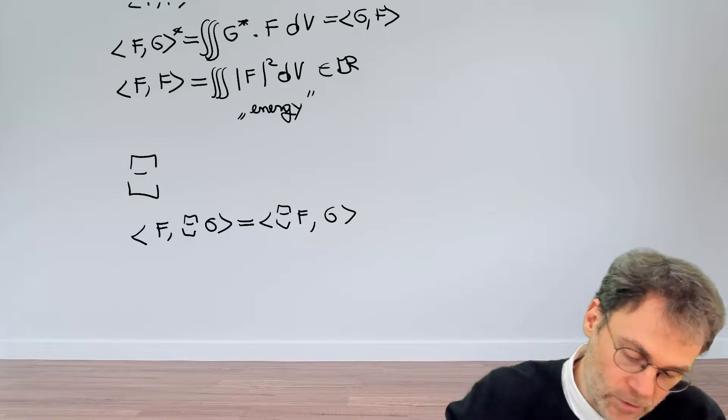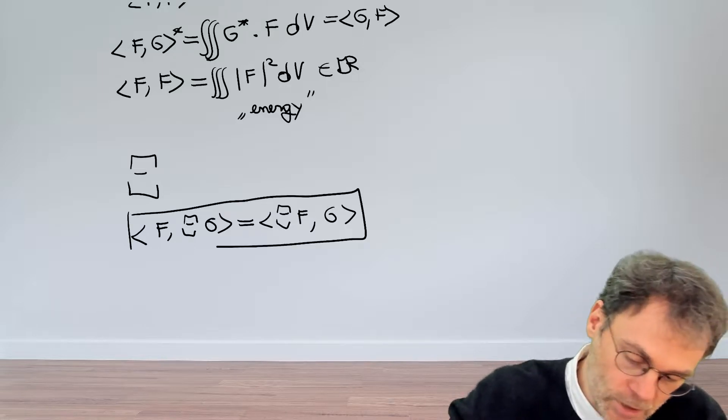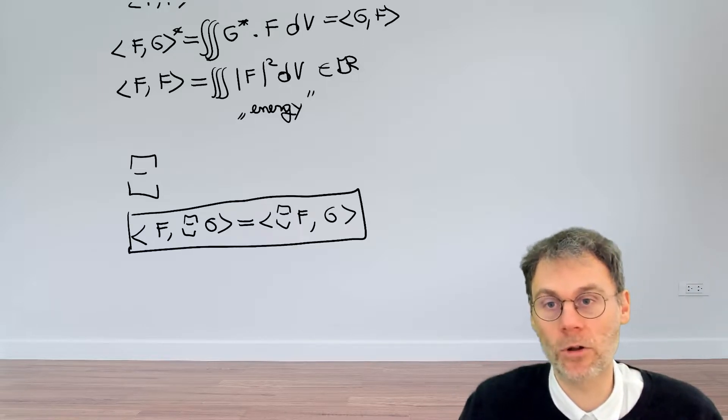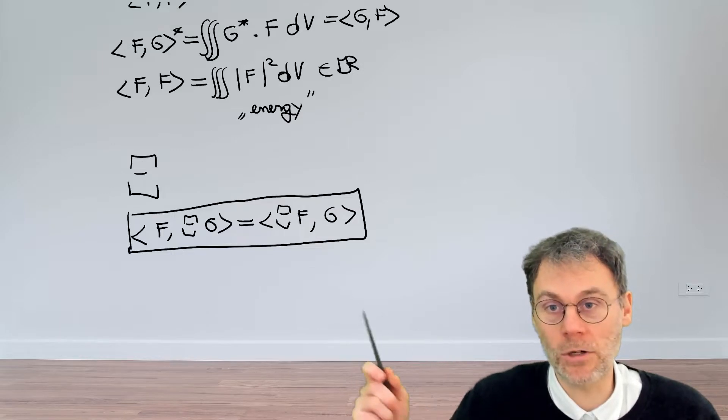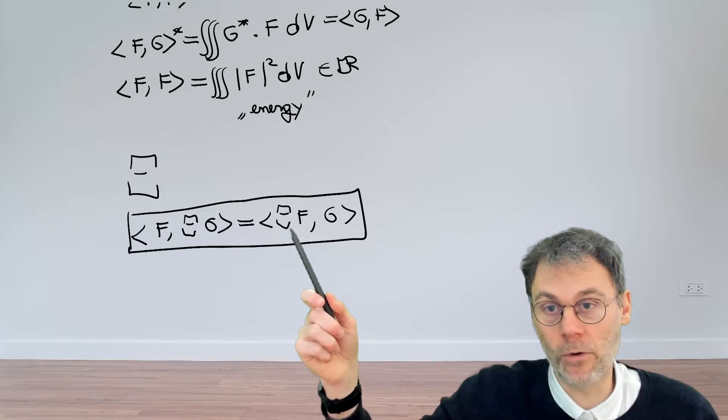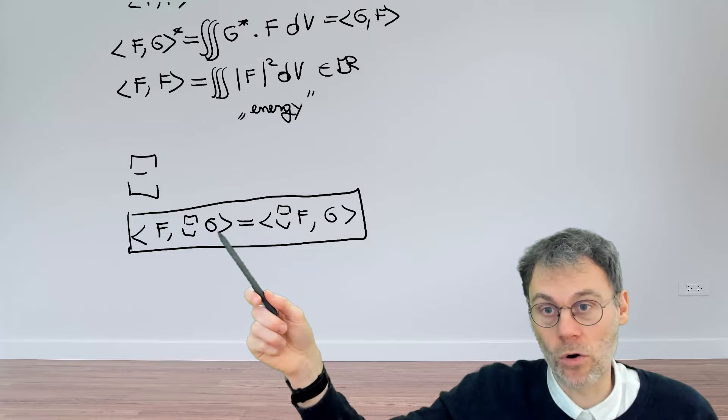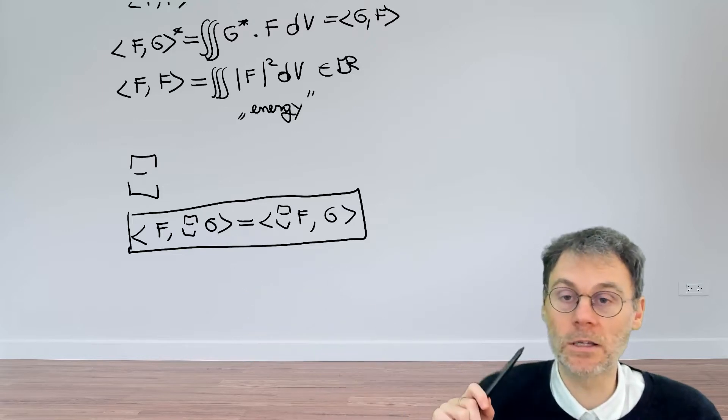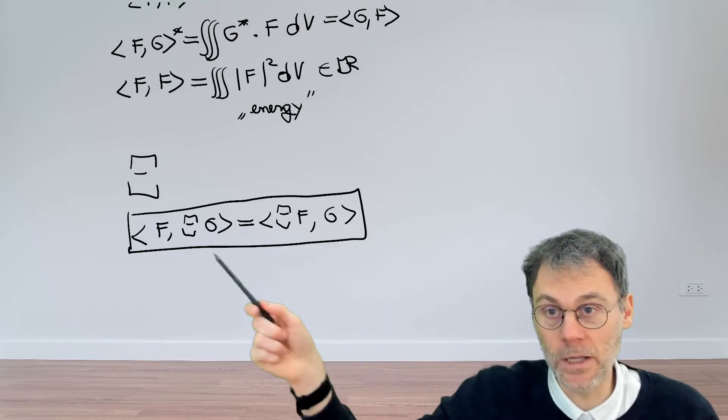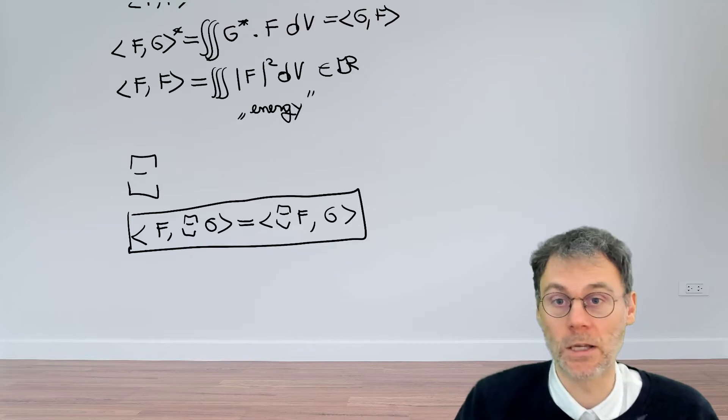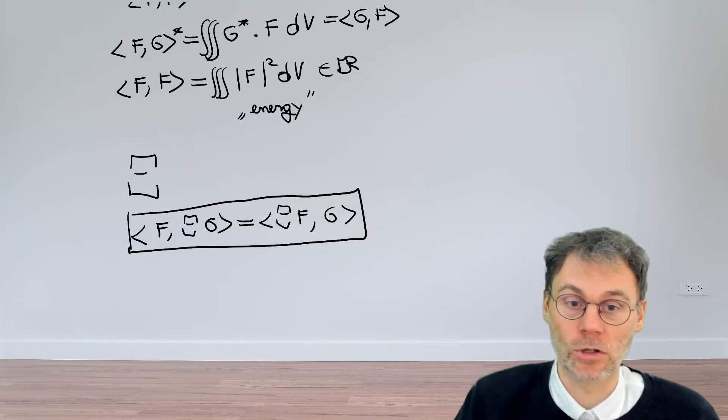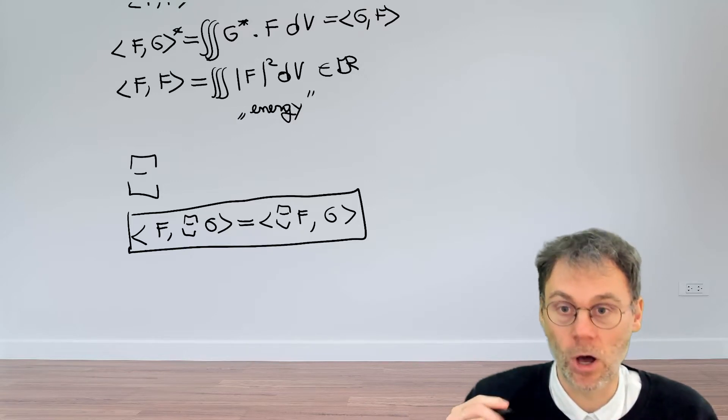So basically, the definition of a Hermitian operator is that if you take these two scalar products here, that it doesn't really matter whether you first operate with your operator on the first factor or on the second factor before taking the scalar product, the end result will be the same in both cases. This is the definition of a Hermitian operator.